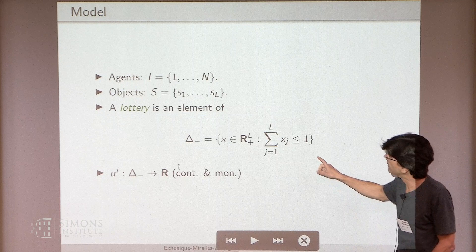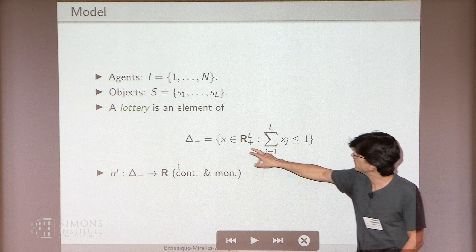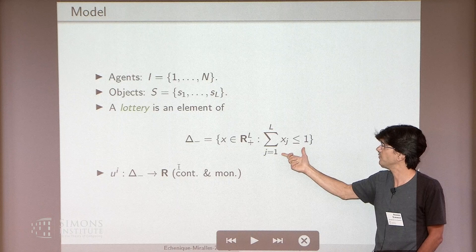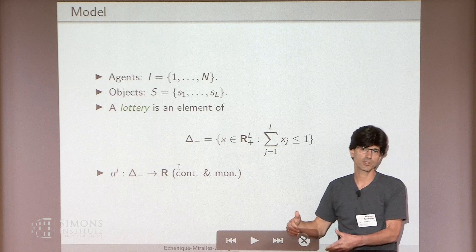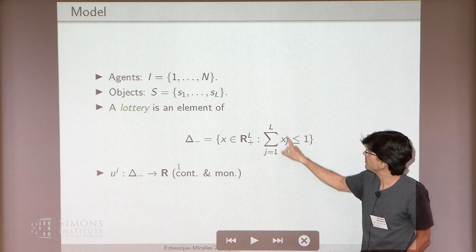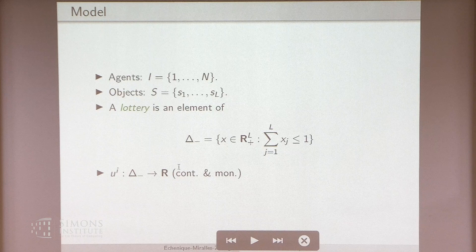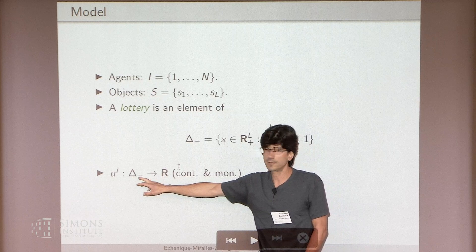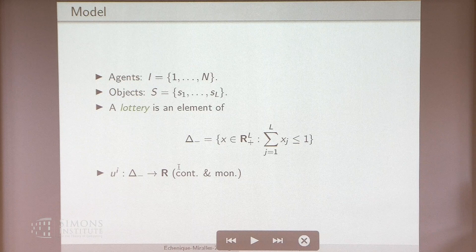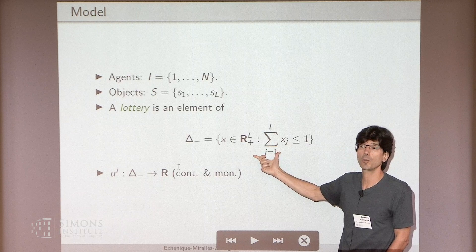A lottery is going to be an element of the sub-simplex — everything below the simplex, so all vectors in R^L_+ which add up to less than 1. The idea implicit in this definition is that there are really L+1 objects: there's one additional object which is like the outside option. So if we don't get an object, we get that. Whenever this sum is less than 1, the complement is the probability of getting the outside option.